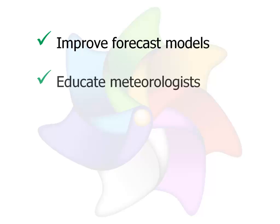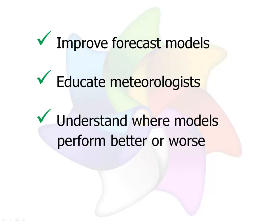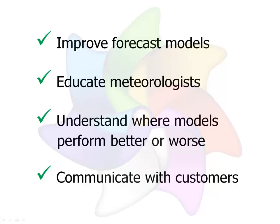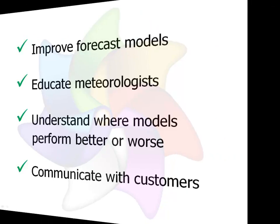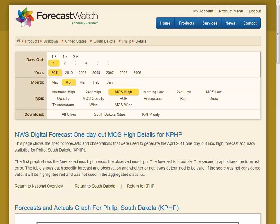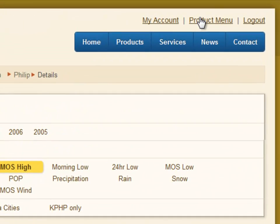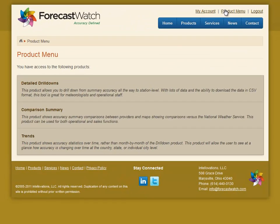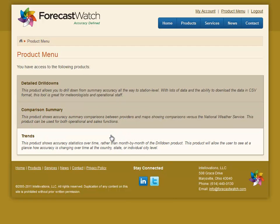We can use this information to improve our models, educate our meteorologists, understand where our models perform better or worse, and communicate to our customers when our forecasts can be more relied on or when we are more uncertain. Let's go back and use the Trends product to see how our forecasts have been doing in Phillip over time. We'll click on the product menu to return to the list of products, and click Trends.